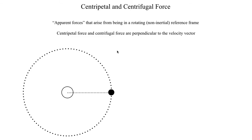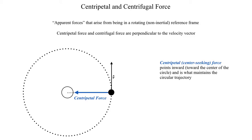These two forces arise from a non-inertial, specifically a rotating, reference frame. If we have a velocity vector pointing from south to north, the centripetal force is what maintains the object's circular path — it's a force that points inward toward the center of the circle, maintaining the object's circular trajectory.